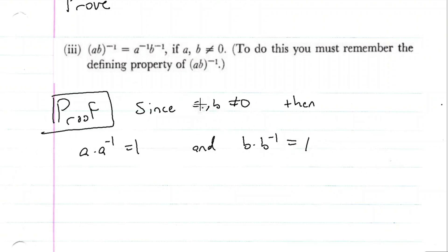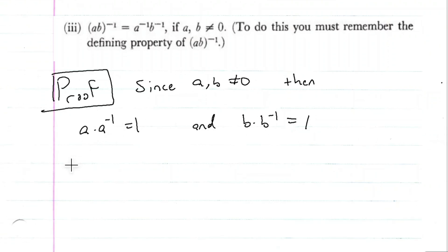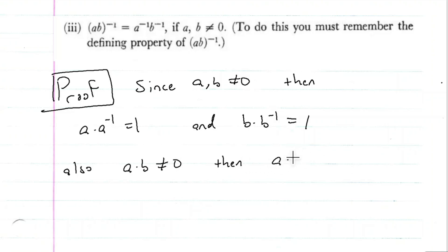Since both these numbers are not equal to zero, their product is not going to be zero, so a times b will not equal zero. That means it has a multiplicative inverse, so a times b times (ab)⁻¹ is equal to one. This is the property Spivak was wanting us to understand.